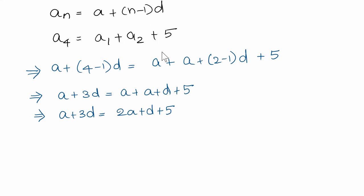a4 is a plus 4 minus 1 times d. It should become a plus 3d. a1 is first term. First term, we have a. Next, a2 is a plus 2 minus 1 times d, which is the second term, a plus d. So, a plus a plus d equals 2a plus d.